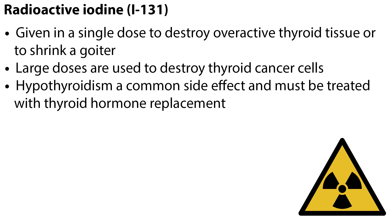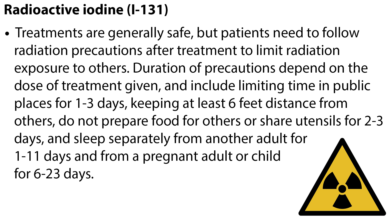Radioactive iodine, or I-131, is a frequently used treatment, usually given in a single dose, to destroy overactive thyroid tissue or to shrink a goiter. Large doses of I-131 are used to destroy thyroid cancer cells. Hypothyroidism is a common side effect and must be treated with thyroid hormone replacement. Patients need to follow radiation precautions after treatment, including limiting time in public places for 1-3 days, keeping at least 6 feet distance from others, not preparing food for others or sharing utensils for 2-3 days, and sleeping separately from another adult for 1-11 days and from a pregnant adult or child for 6-23 days.